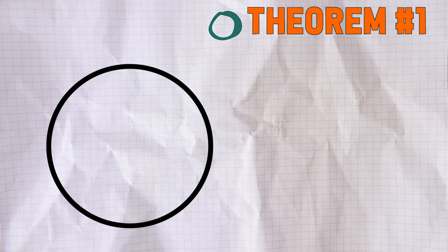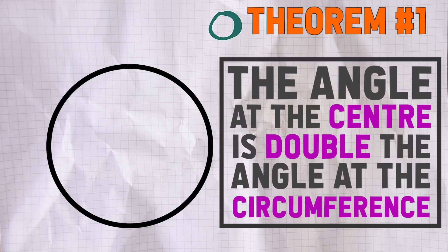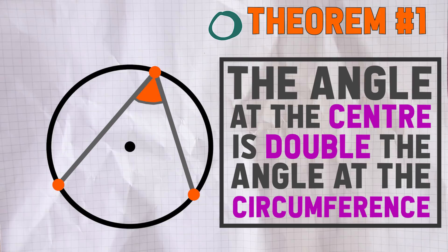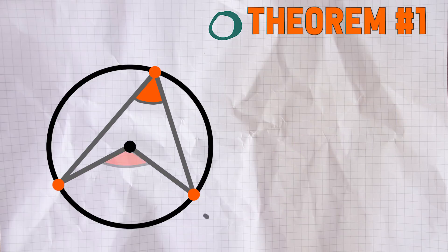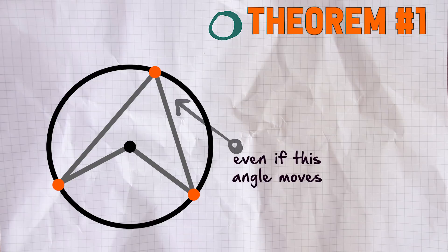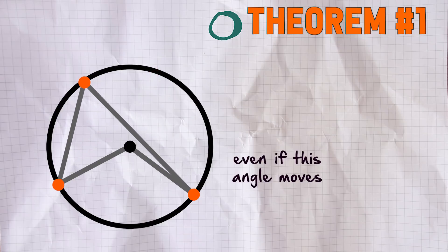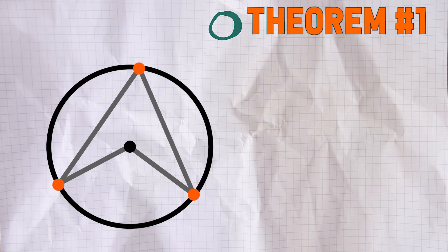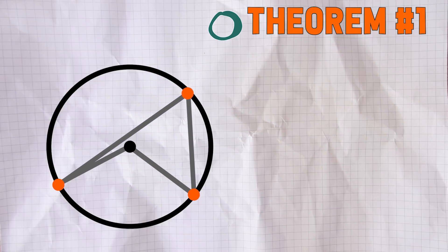Right then, theorem number one: the angle at the centre is double the angle at the circumference. So this angle at the centre here will always be double the angle at the circumference, and that is the case even if the angle on the circumference moves around like it is there.